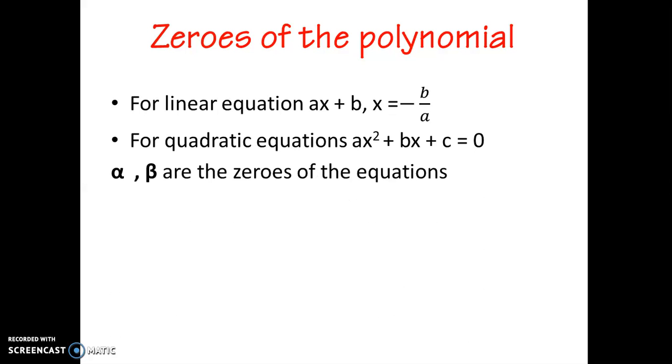Second, for quadratic equations ax square plus bx plus c equal to zero. If we have alpha and beta as zeros of the equation, then alpha plus beta is equal to minus b upon a and alpha into beta equal to c upon a.